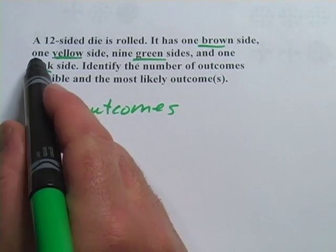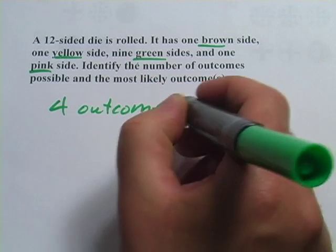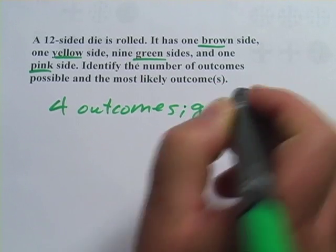Brown side is just 1, yellow side is just 1, the green side is 9, and the pink side is just 1. So definitely green is the most likely outcome.